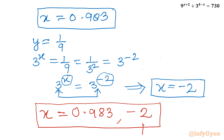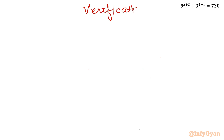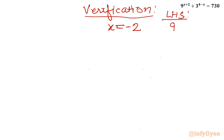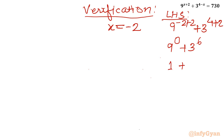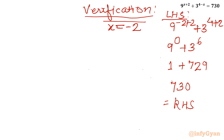Let us verify for x equal to minus 2. Writing LHS: 9 power (minus 2 plus 2) plus 3 power (4 plus 2), which becomes 9 power 0 plus 3 power 6. 9 power 0 is 1, and 3 power 6 is 729, since 81 times 9 is 729. So LHS equals 1 plus 729 equals 730, which equals our RHS. Hence this value is verified. The second real solution is x equals 0.983.